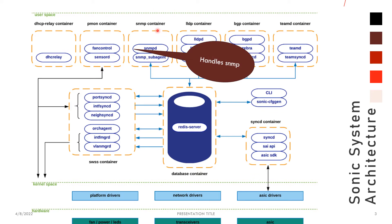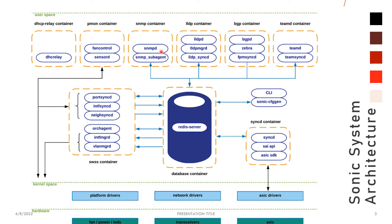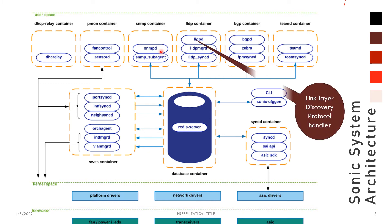Next is the SNMP container, which has SNMPD as well as an agent, and it handles all types of SNMP packets. Then we have LLDP — the Link Layer Discovery Protocol. Any link application event will be reported from the kernel to the LLDP container. This has different modules: LLDP manager as well as SyncD. The SyncD communicates internally to the ASIC, and it is the only link connected to the ASIC — so any communication has to go to the ASIC through SyncD.